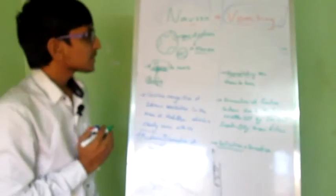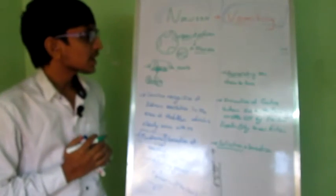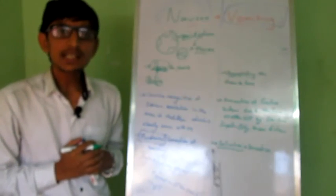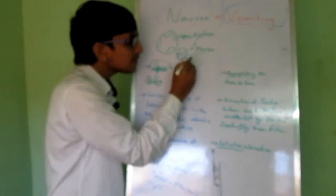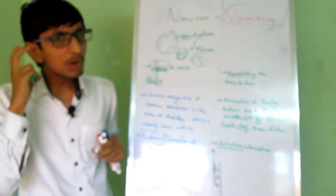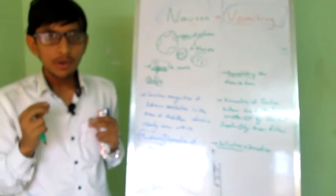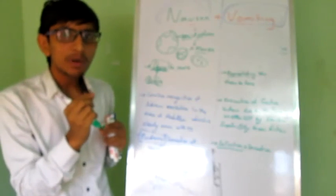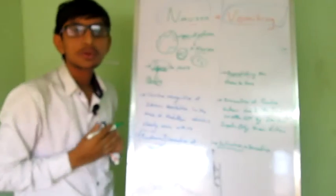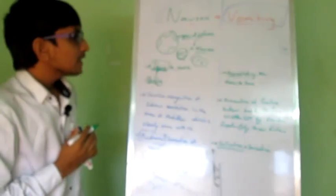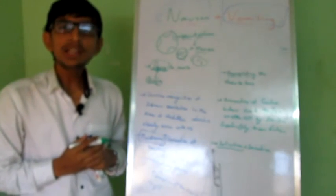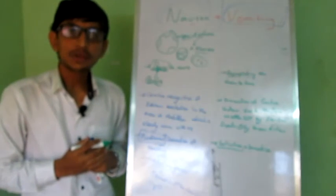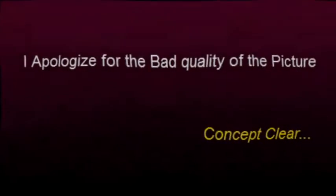This is the end of my discussion for this lecture. In the next lecture, I will tell you exactly where the vomiting center and the chemoreceptor trigger zone are located in your brain. Friends, if you like this video please share your comments and share this video. Thank you.